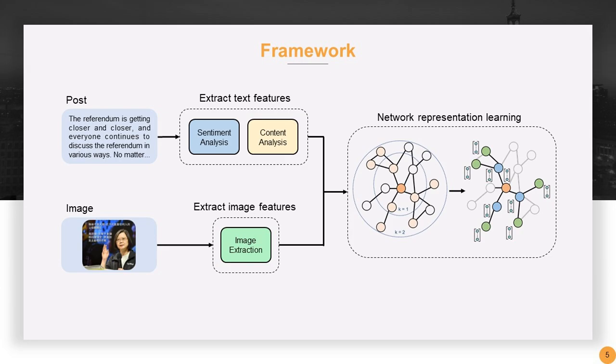After concatenating these three elements, we treat each post as a node. The existence of edges is determined by the degree of user overlap between posts, and we train the graph using GraphSAGE.